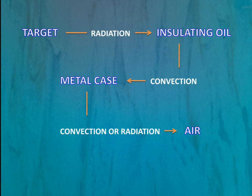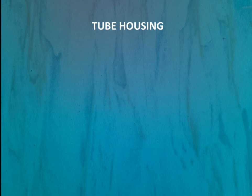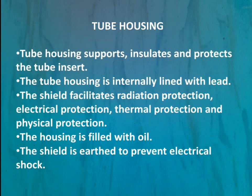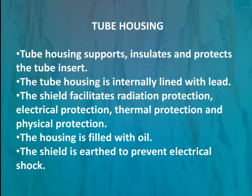This is how the excess heat generated at the target area is transferred to the external environment, facilitating proper working of the x-ray tube. Moving on to tube housing: the entire x-ray tube is placed inside a lead case, and that lead case forms the tube housing. The tube housing provides support, insulation, and protects the glass envelope. It is internally lined with lead, which is why it is called a lead case.